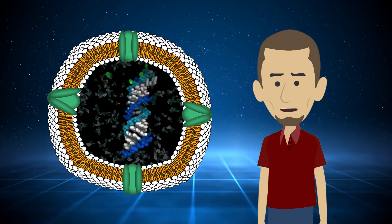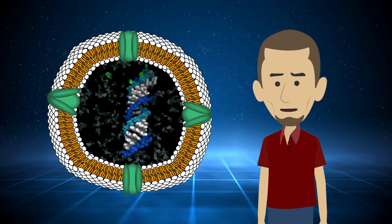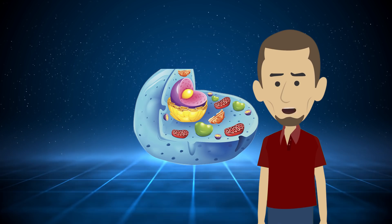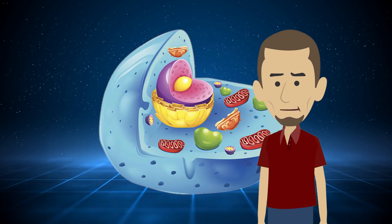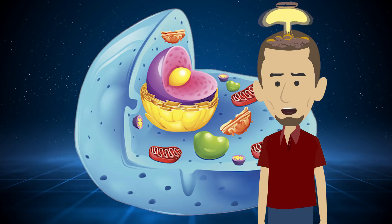But can it get us all the way to complex eukaryotes? In my next video, we'll explore how this simple prokaryotic cell can obtain membrane-bound organelles like mitochondria and plastids. It kind of blew my mind when I first learned how this happened, so make sure you're subscribed and hit that bell to get notified so you don't miss it.